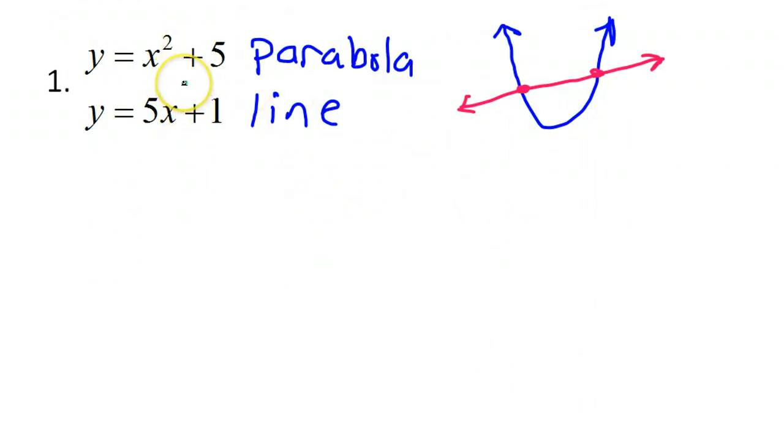Now, we've learned about substitution, elimination. Most often, in a situation like this, substitution is going to be the way to go. For example, in this case, I mean, look at these two if I wrote them side by side. I have y equals 5x plus 1, and then I have y equals x squared plus 5. When we do substitution, we try to get one variable by itself. Well, we already have that.